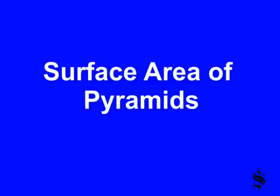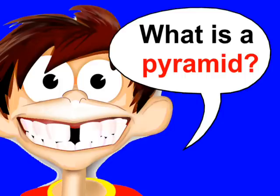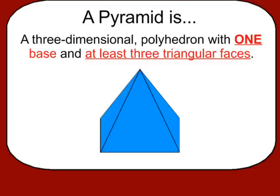Surface area of pyramids. So what exactly is a pyramid? A pyramid is a three-dimensional polyhedron with one base and at least three triangular faces.